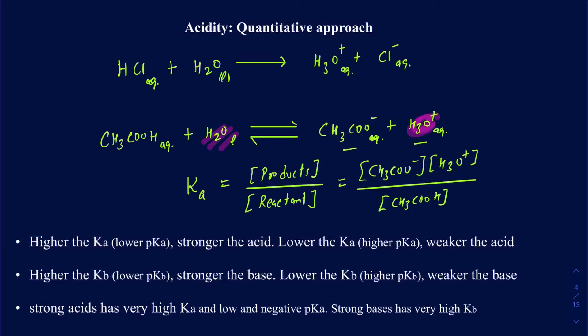If the Ka value is high, think about what that tells you about the relative concentration of products compared to reactants. If Ka is high, you must have a very high concentration of products — that means you have a strong acid. You'll have a lot of H3O+ being produced, so acidity is high and pH is low. High Ka reflects a stronger acid.